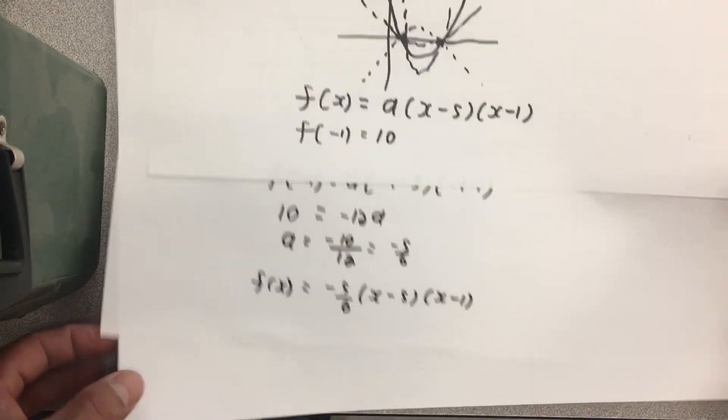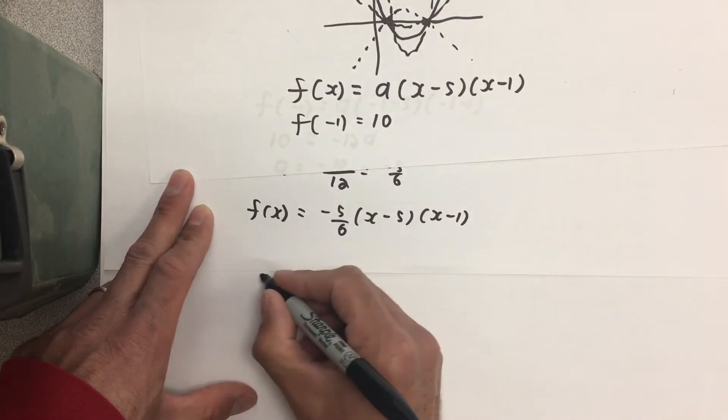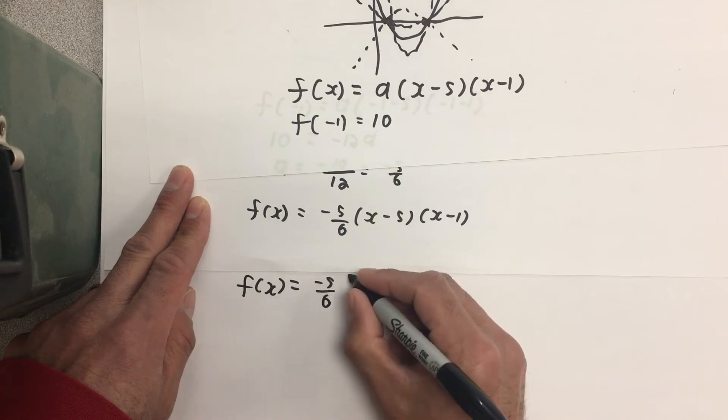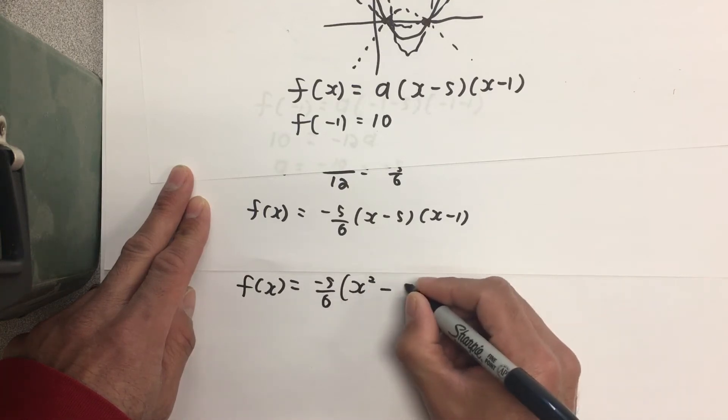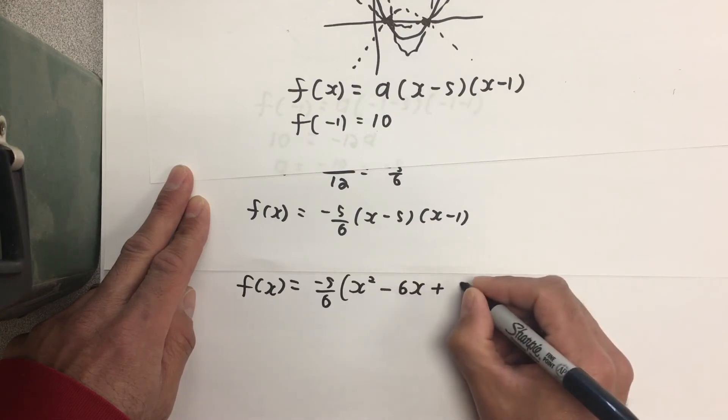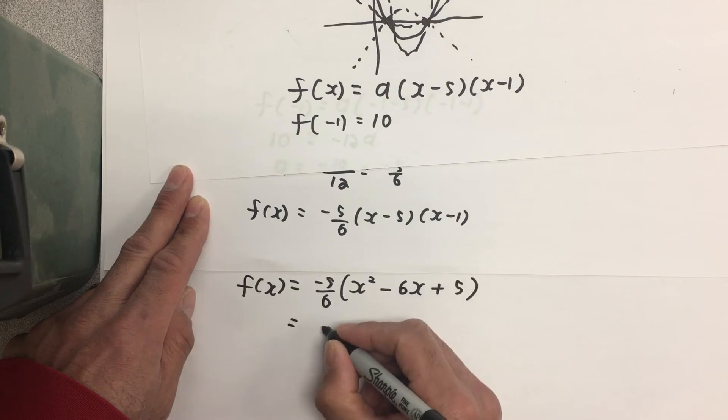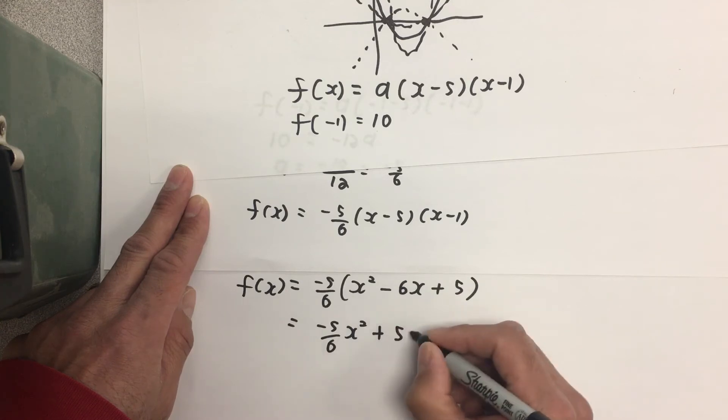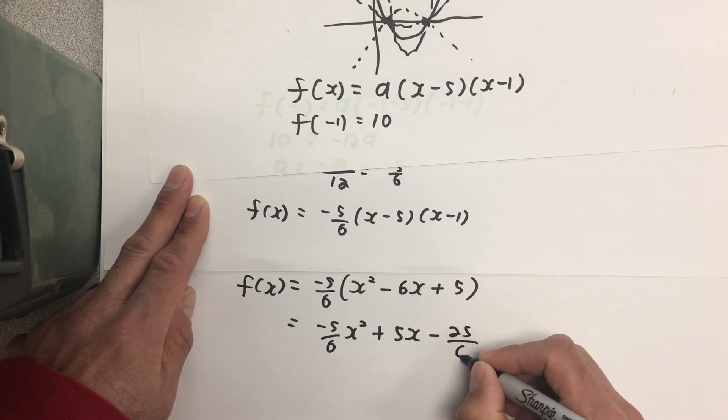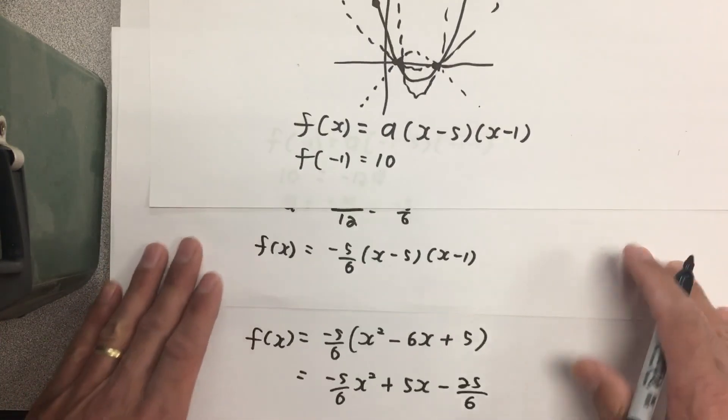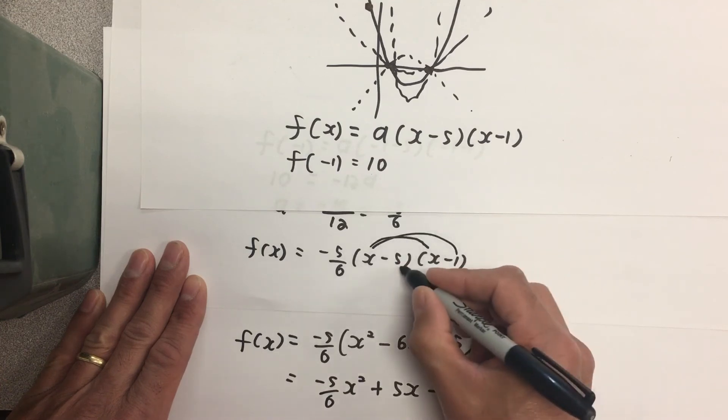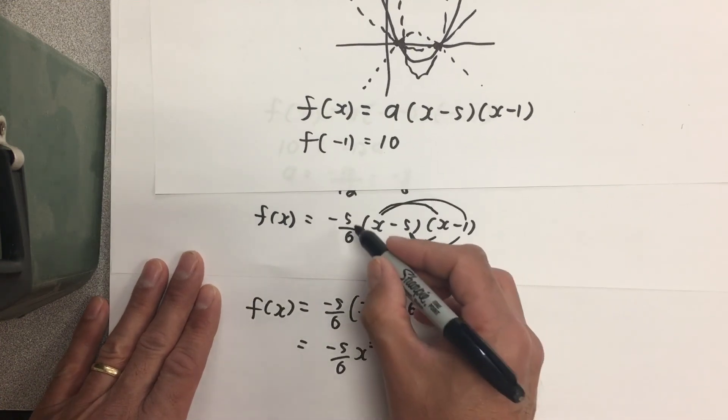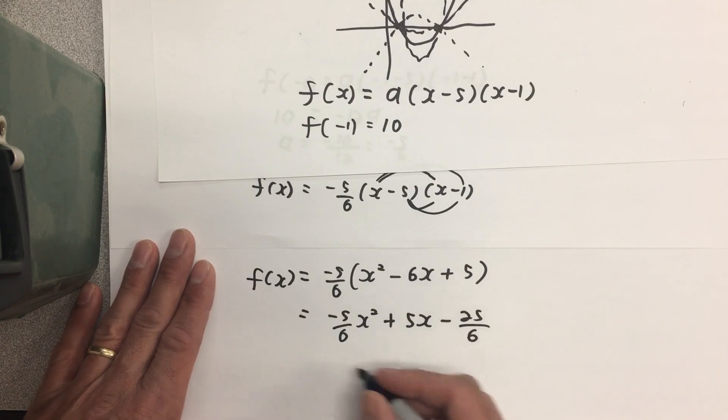Now we can expand this out. Now all I did here was I used FOIL—first, outside, inside, last—to expand this out here. And then I multiplied this coefficient by each of those terms to get the final answer in standard form.